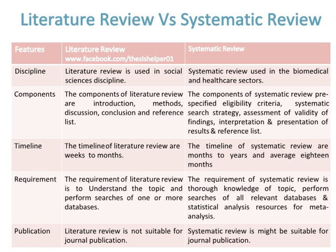The timeline of a Literature Review is weeks to months, while the timeline of a Systematic Review is months to years, averaging 18 months. The requirement of a Literature Review is to understand the topic and perform searches of one or more databases, while the requirement of a Systematic Review is thorough knowledge of the topic, perform searches of all relevant databases, and statistical analysis resources for meta-analysis.